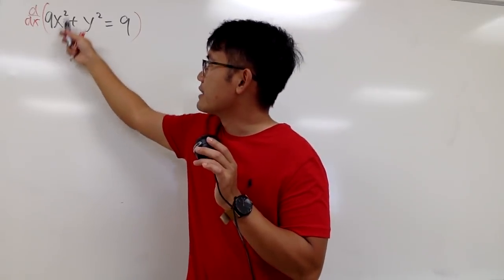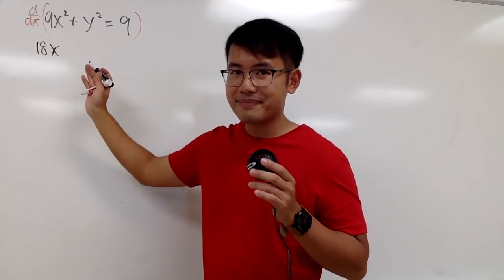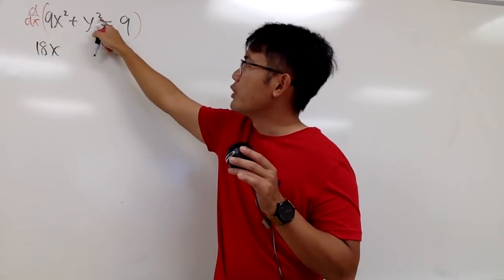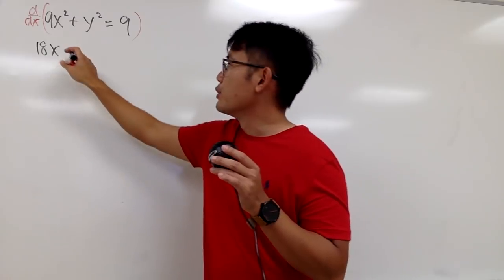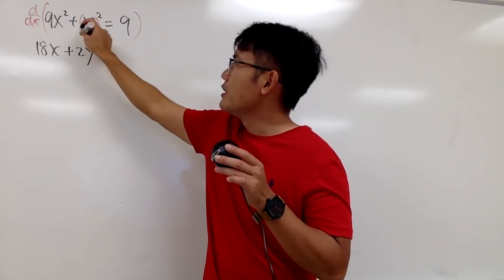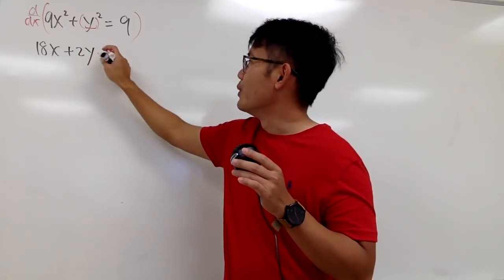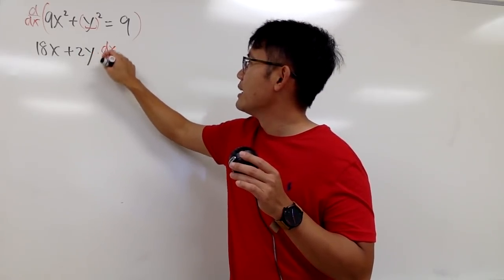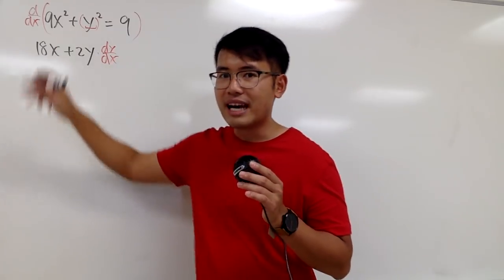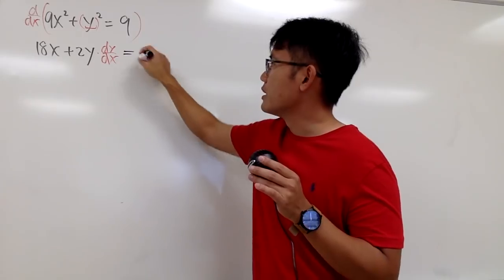The derivative of 9x squared — using the power rule — gives 18x. Next, take the derivative of y squared with respect to x. Bring the 2 to the front to get plus 2y, but don't forget the inside function is y, so we multiply by dy/dx because of the chain rule. For the right-hand side, the derivative of 9 is just 0, since it's a constant.